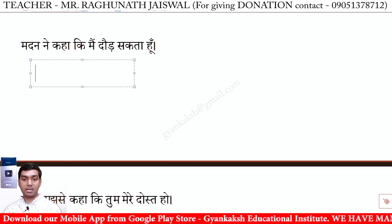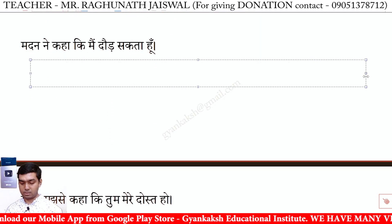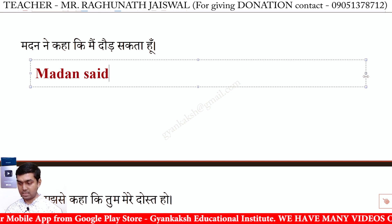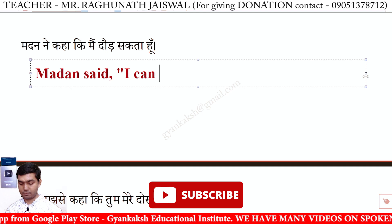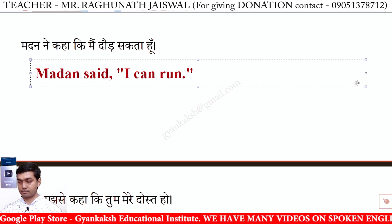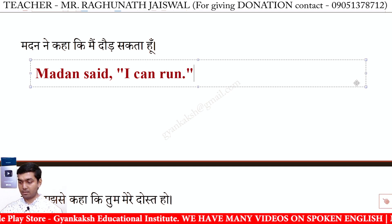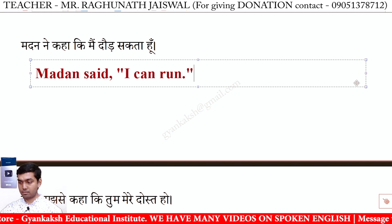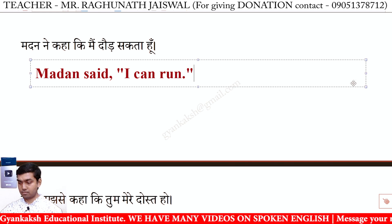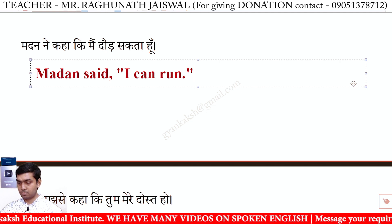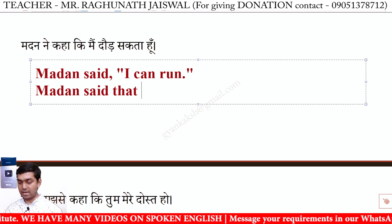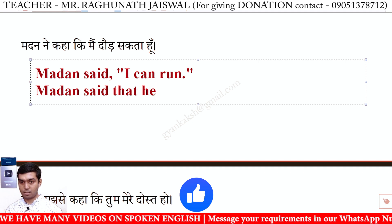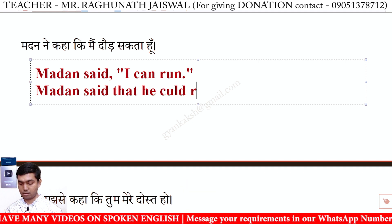Madan ne kaha mein daur sakta hoon. Direct: Madan said, 'I can run.' Indirect: Madan said that he could run.